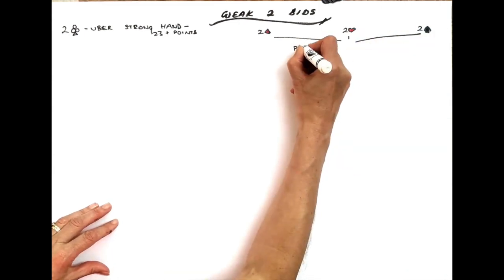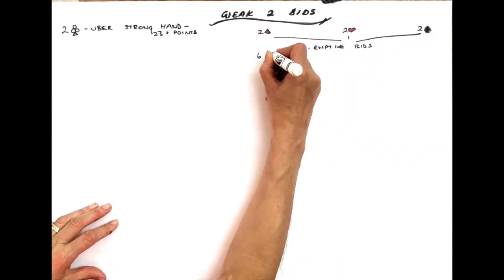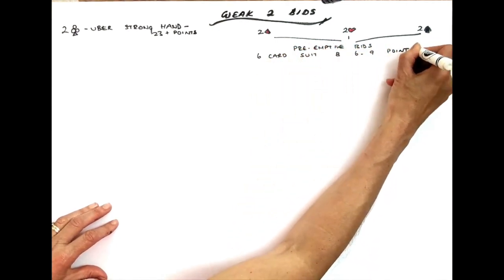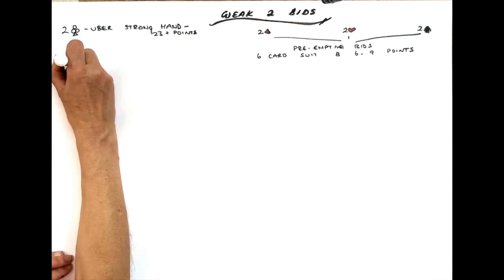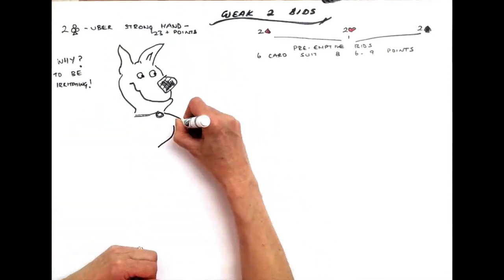Most modern bridge players use these as pre-emptive bids. That means they're going to use them to show a six card suit with about six to nine points. Why do this? To be irritating. You may be small on the point front, but you can be high on the annoyance radar.